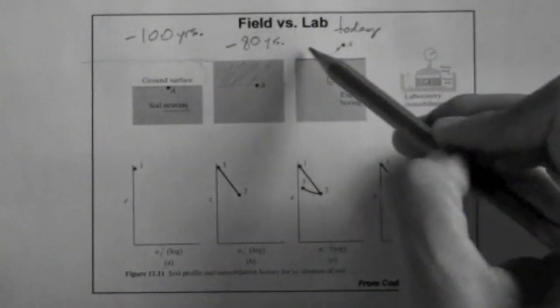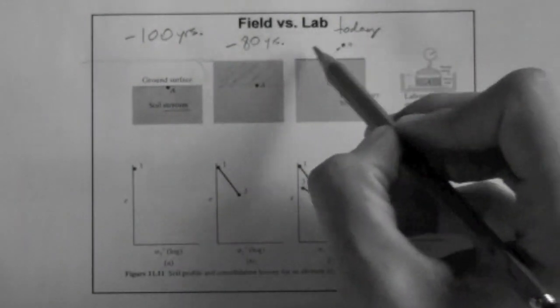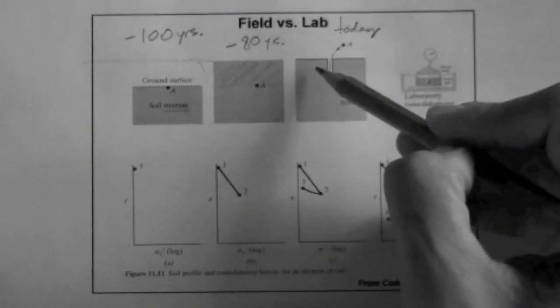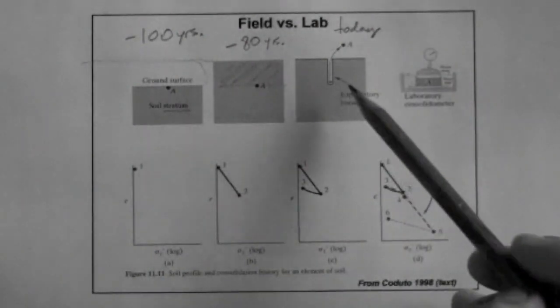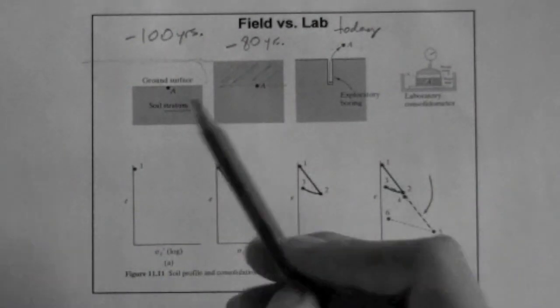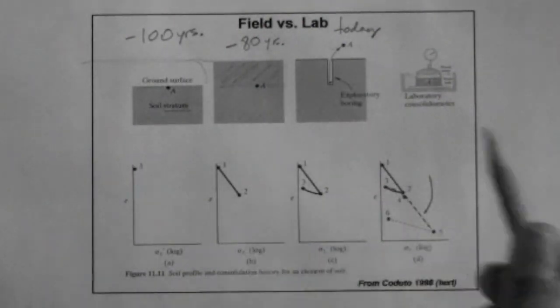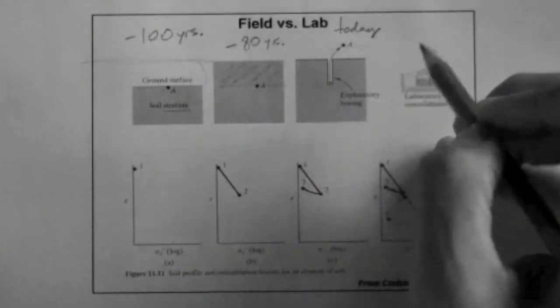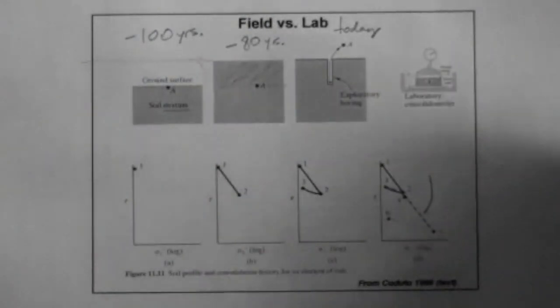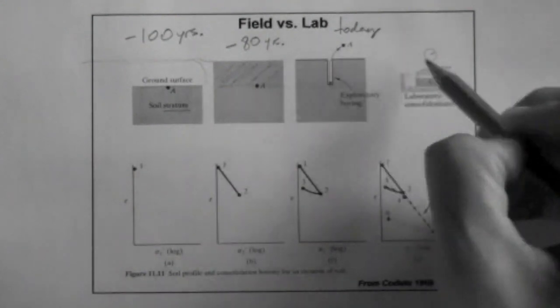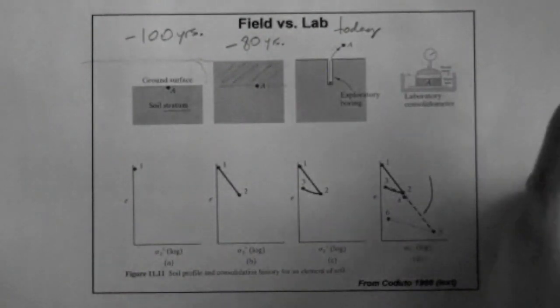Then 80 years later we come in and we say that we want to build a structure on top here, so we want to understand or measure what are the consolidation properties of this soil. We don't know what happened 80 years ago or 100 years ago, we only know what happens today. So we come in here and routinely, as we do routinely, we take a specimen out of the ground and we put it in the lab to test.